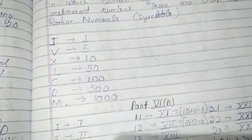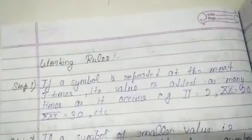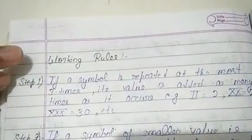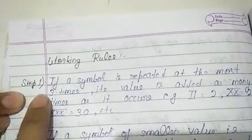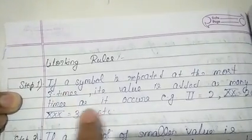Now before going to the numbers, I want you all to learn these working rules. Step 1: If a symbol is repeated at the most three times, its value is added as many times as it appears.